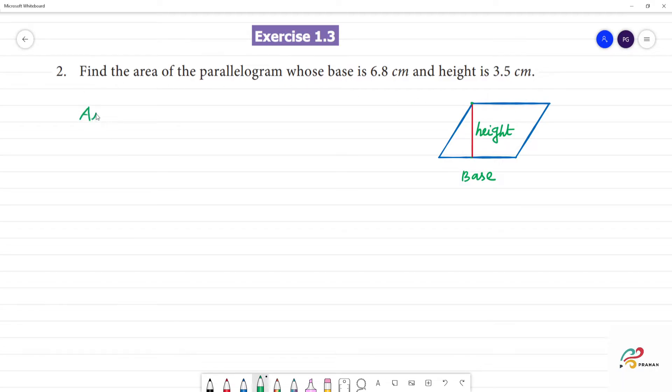Area of parallelogram equals base into height. Base multiplied by height. What is the base? The base is 6.8 cm. 6.8 cm multiplied by 3.5 cm.